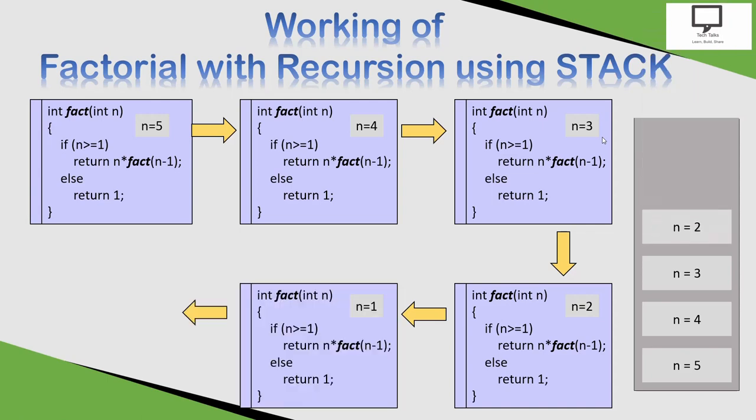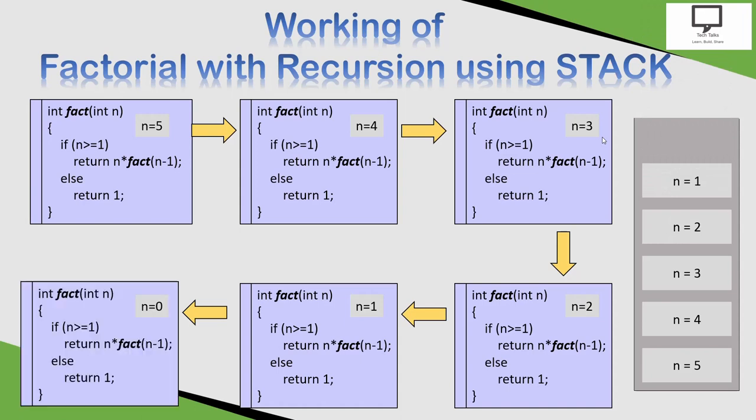In this way, the chain of function calls is done. At the end, you can see the recursive condition is false. Hence it will return the value from the else part. That means it returns value 1. Here, observe the content of the stack while returning back.